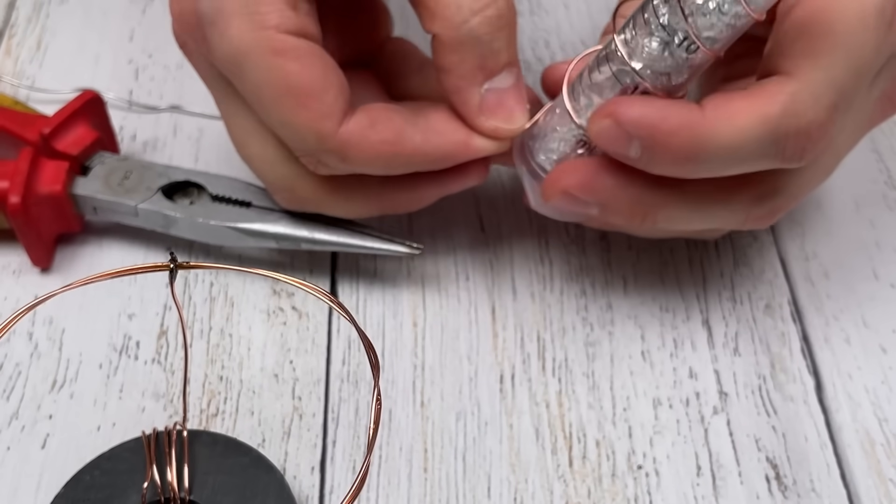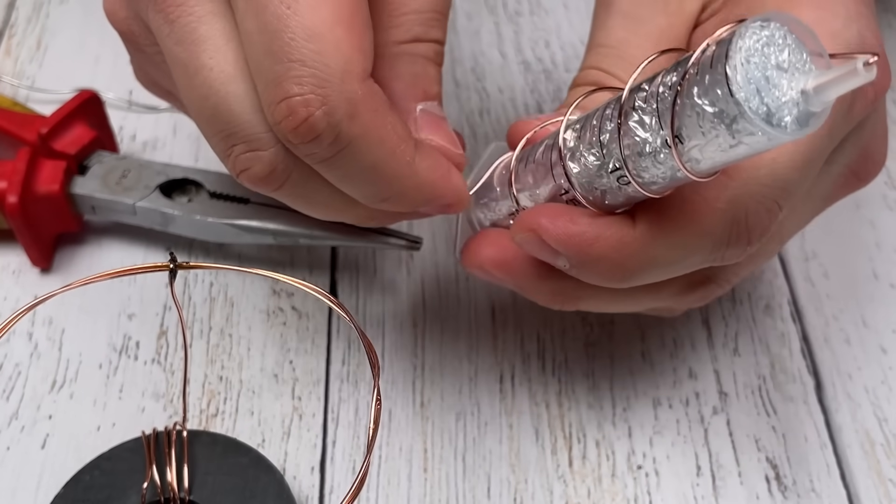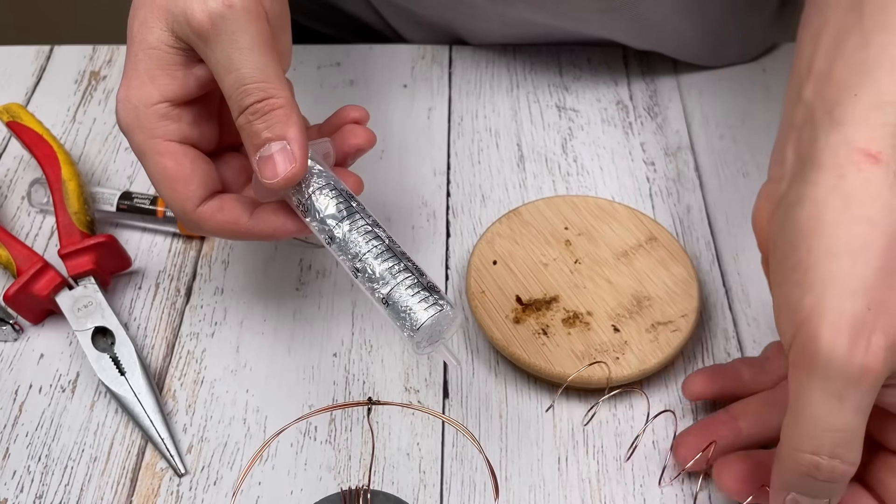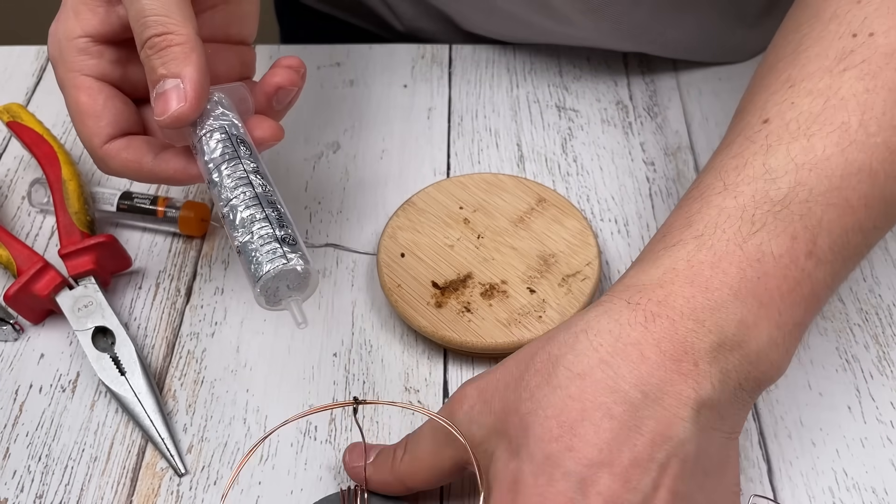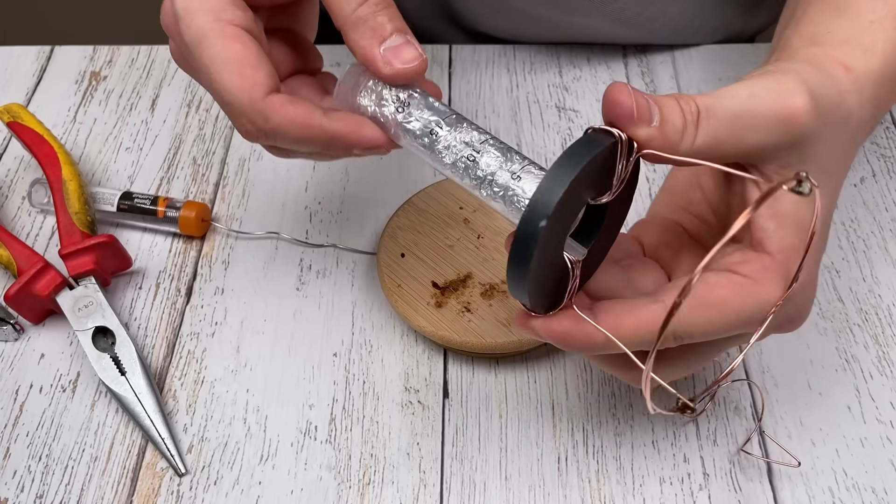Wrap another wire around the syringe and insert it into the center of the magnet. This will help strengthen the signal and improve reception quality.